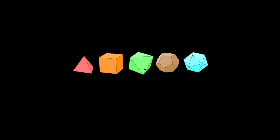What constitutes a Platonic solid is pretty simple. It's a solid — a 3D object — where all of its faces are the same. That's it; there's nothing more to it than that.